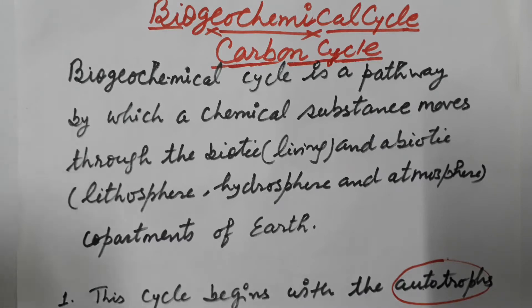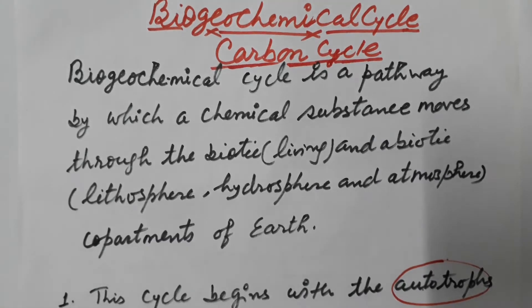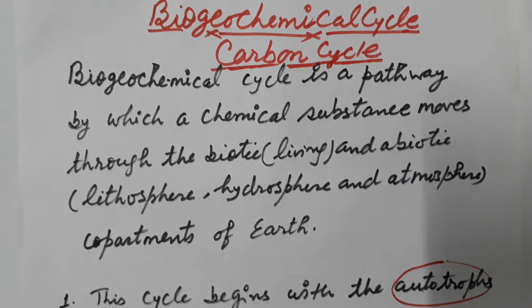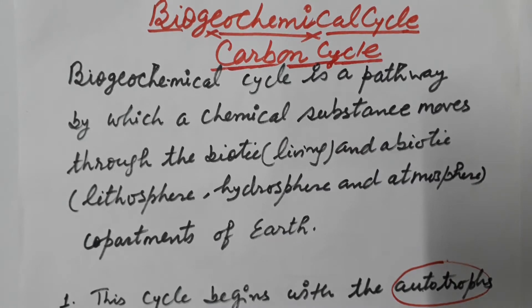Here we are discussing the carbon cycle — how we define it. It is a cycle in which carbon is cycled repeatedly through different forms by various physical and biological activities in nature. Various physical and biological activities are going on which convert carbon into different forms and help in the cycling of carbon.